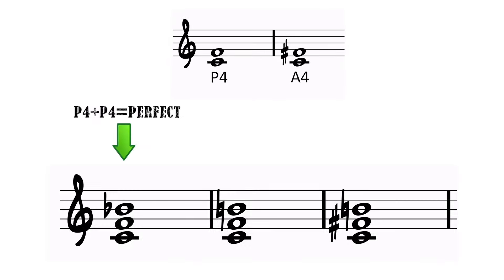A perfect fourth plus another perfect fourth equals a perfect quartal: C, F, Bb. And we'll use the notation C4,7 to represent it.